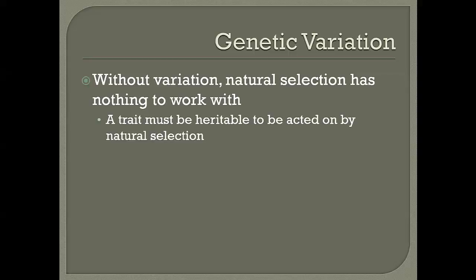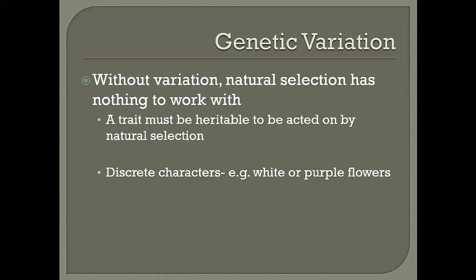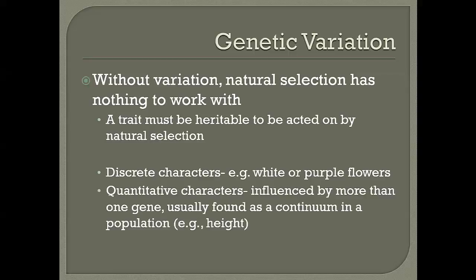In order for evolution to work on a trait, that trait has to be heritable — it must be in the genetic code. Certain characters, such as white or purple flowers, are discrete, meaning you can be one or the other. Other characters are quantitative, meaning more than one gene influences the trait. An example of a quantitative trait is human height — graphing the distribution would give a standard curve, indicating height is controlled by many interacting genes.